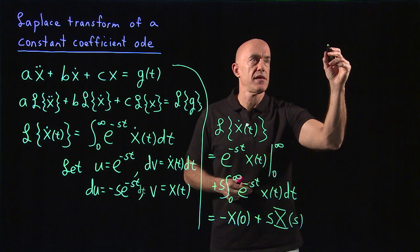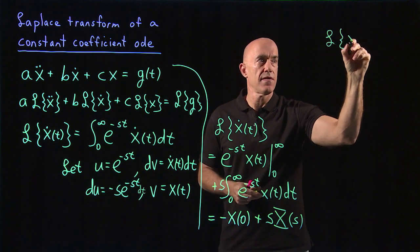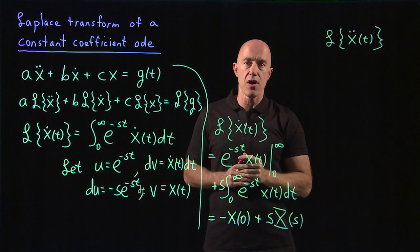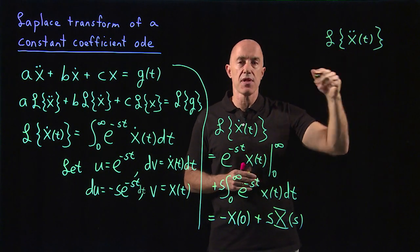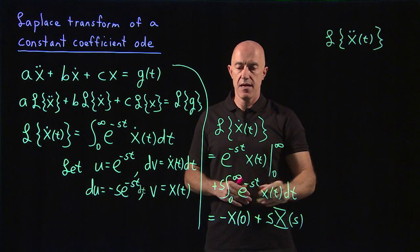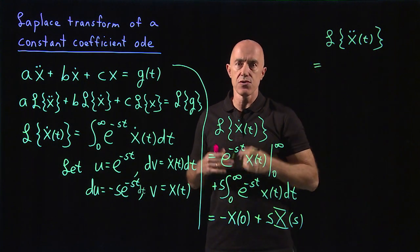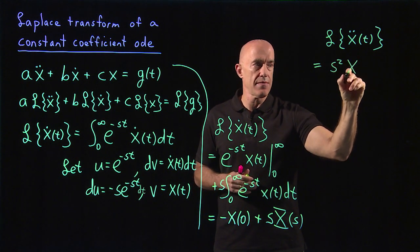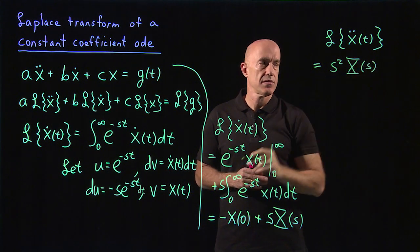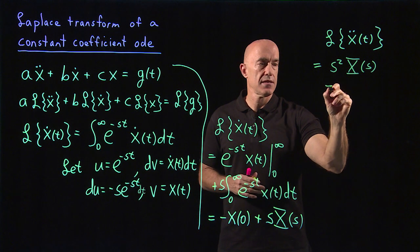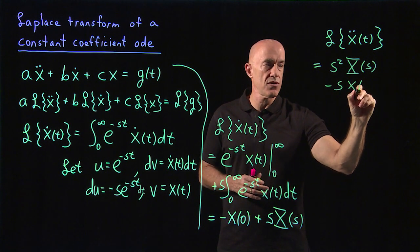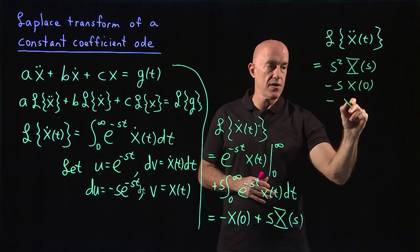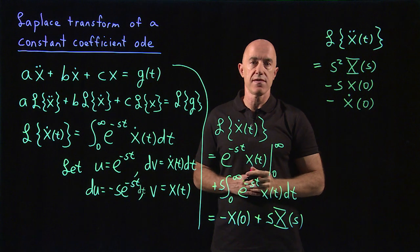In a similar way, we can find the Laplace transform of x double dot. The technique is to do an integration by parts until you reduce to the Laplace transform of x dot, and then use the previous result. What you end up with is s squared times the Laplace transform of x, which is capital X of s, minus s times the initial value x(0), minus x dot of 0. So you also need the initial value for the derivative of x.